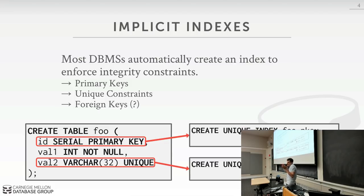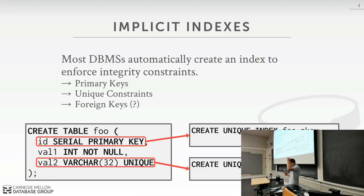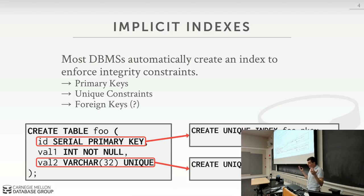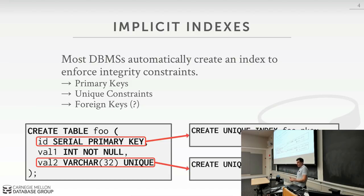If I call create table and define a primary key and a unique key, then implicitly the database system is going to execute SQL commands to create these two indexes for you. For the primary key, it'll automatically create a unique index on the ID. For the unique keyword, it'll create a unique index on that as well. How else would the database system enforce these constraints? The fallback option is a sequential scan through every tuple, but with a billion tuples, every single insert would require scanning through all of them. So we build an index to do this very quickly.